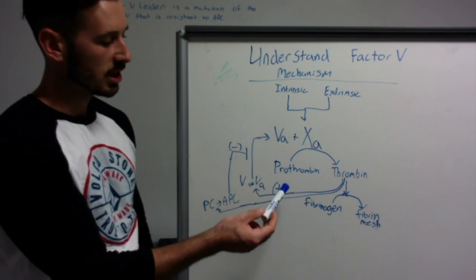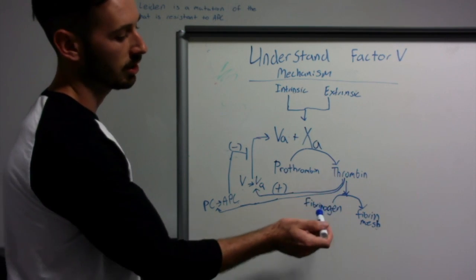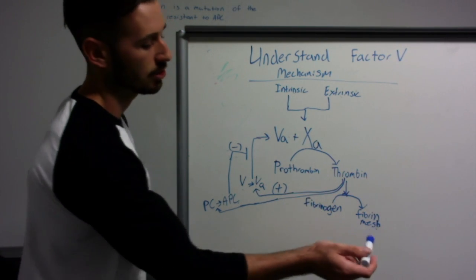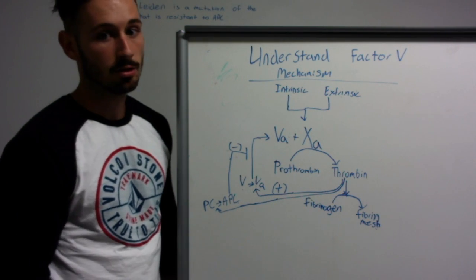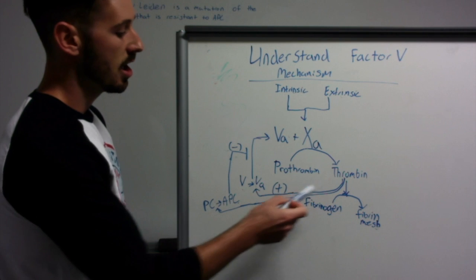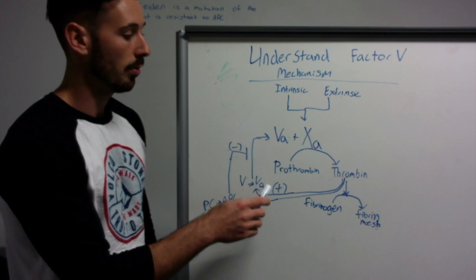Activated Factor X cuts prothrombin into thrombin, and then thrombin cuts fibrinogen into its fibrin mesh which forms the clot. Thrombin also works to regulate the clotting process by positively regulating Factor V into its active form.